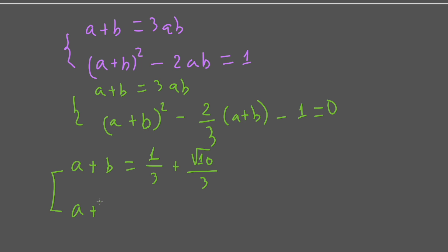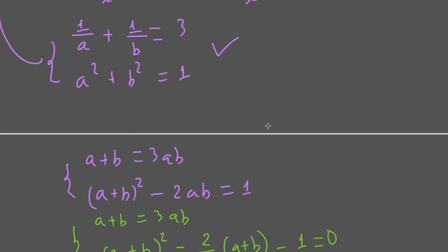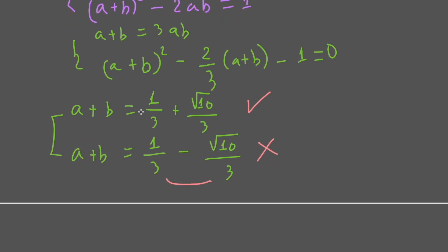Or a plus b equal to (1 minus square root of 10) over 3. Since a and b both have to be greater than 0, we reject the second option because its sum is negative — the sum of two positive numbers cannot be negative. So we select the first solution.